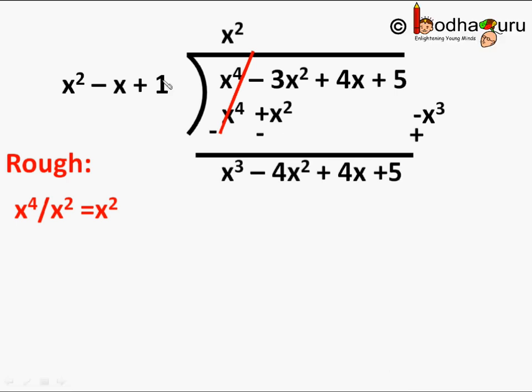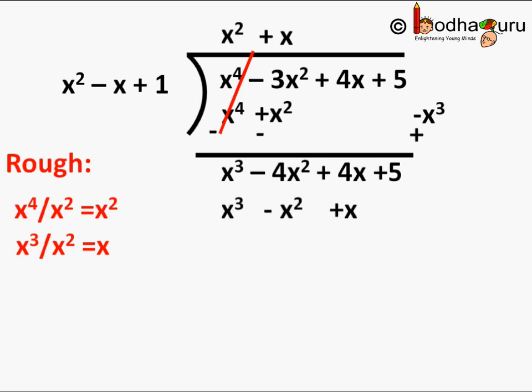Now we again divide the highest degree term of this remaining dividend by the highest degree term of the divisor — that is x³ by x² — this gives us the next term of the quotient, which is plus x, and we write it above. We again multiply the divisor x² minus x plus 1 by x.